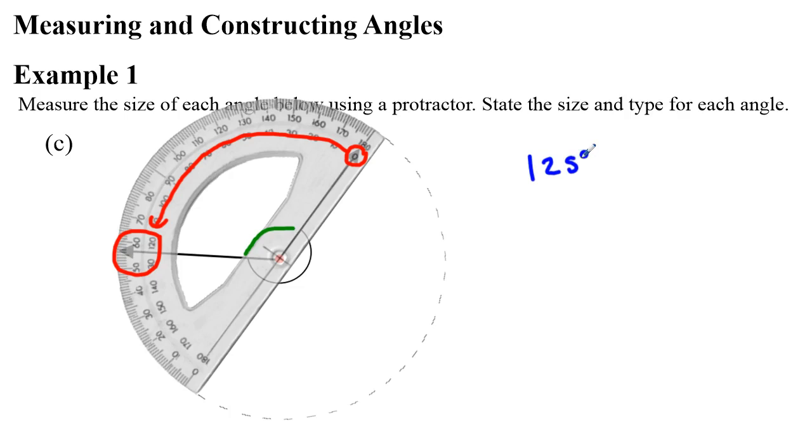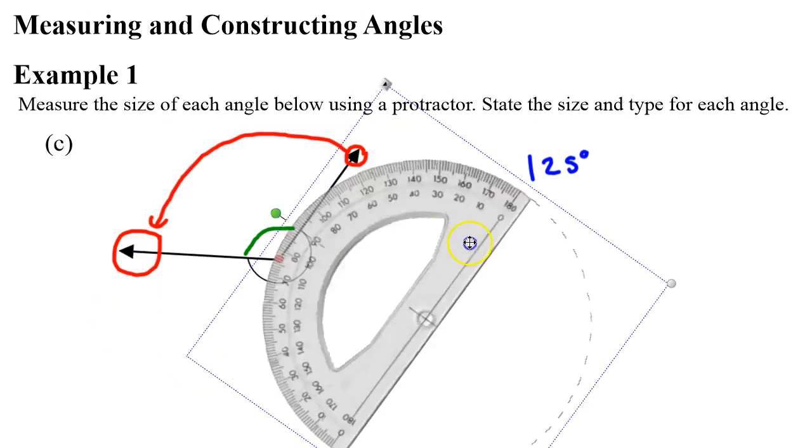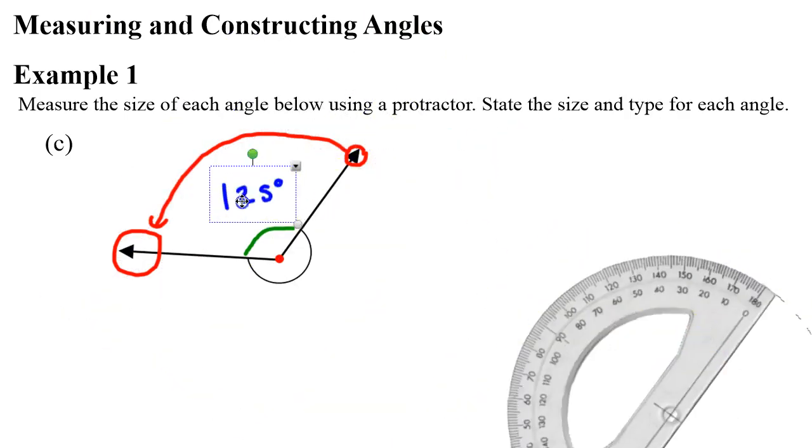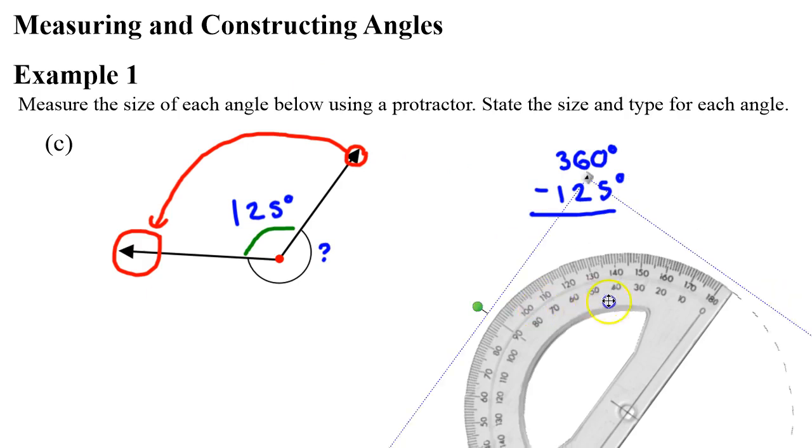Okay, now remembering we haven't actually calculated our reflex angle. So let's move the protractor away. This 125 degrees represents this green angle here. The angle we're trying to find is the reflex angle on the outside. So how do we find that now? Well, angles in a revolution add up to 360 degrees, because a revolution is a full circle. So if we take the 360 and subtract the 125 degree angle, it will actually tell us the size of our reflex angle.